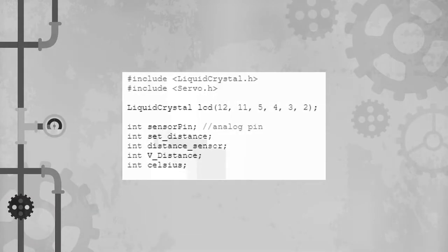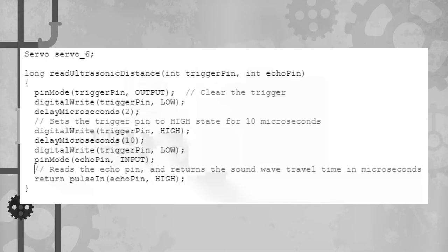For the coding part, the first step is to include the LiquidCrystal.h and Servo.h libraries. LiquidCrystal.h is for the LCD display while Servo.h is for the microservo. We then declare the LiquidCrystal LCD object and integer variables: sensor pin, set distance, distance, voltage, and Celsius. For the servo, Servo servo_6 connects to pin 6. At first, the servo is set to LOW and does not move, with a delay in microseconds before being set HIGH and then back to LOW, returning the pulse in HIGH.